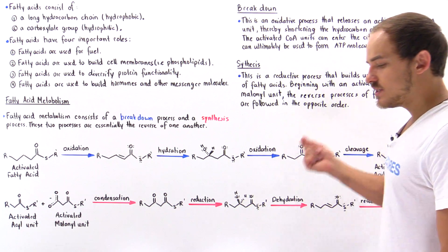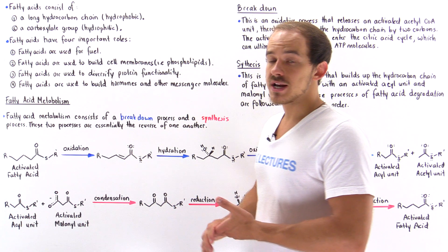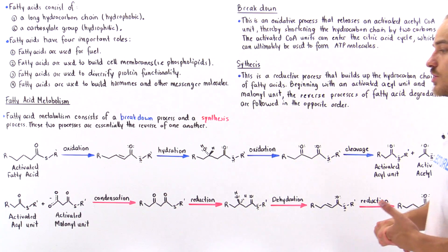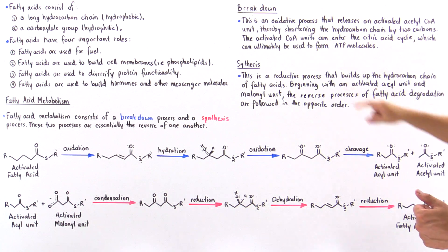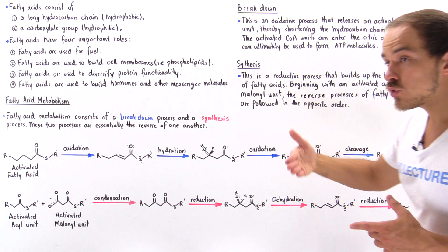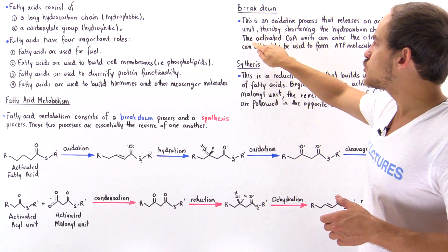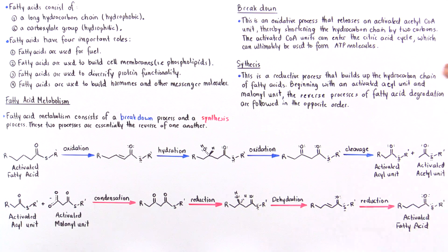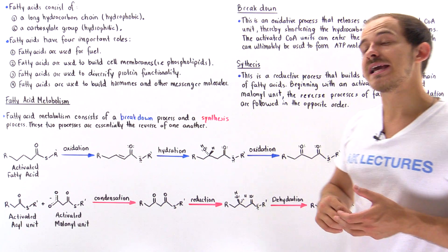Once we form the acetyl units, they can enter the citric acid cycle, which can ultimately be used to generate high-energy ATP molecules. To summarize: the breakdown of fatty acids is an oxidative process that releases activated acetyl coenzyme A units, shortening the hydrocarbon chain by two carbons per cycle. Those activated acetyl coenzyme A units then enter the citric acid cycle where they're used to generate high-energy ATP molecules.